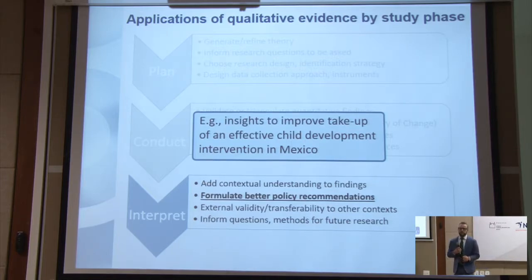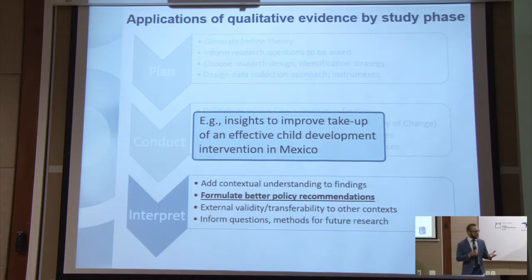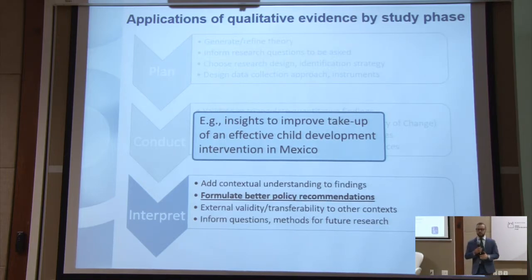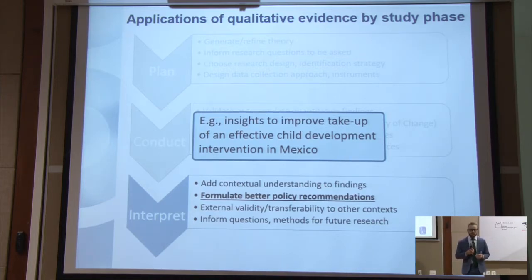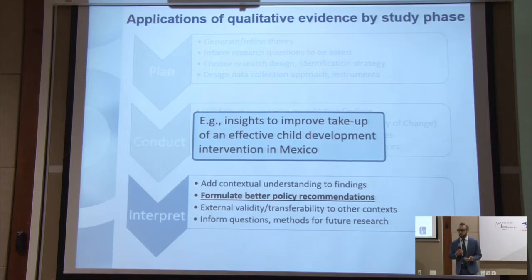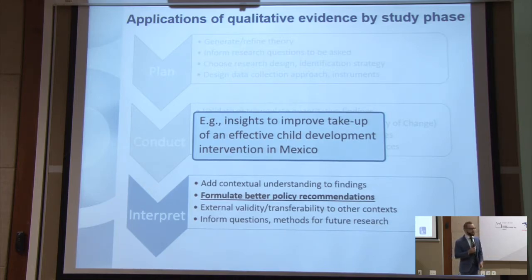Formulating better policy recommendations: one impact evaluation found that in a child development intervention in Mexico, the intervention was effective — the quantitative methods indicated there was a statistically significant improvement in the intervention group — and at the same time, there was low uptake. The qualitative evidence helped these researchers understand that many of the people participating in the program didn't actually know what the program was offering. They didn't fully understand what was available or what the goals were, and they were participating because their neighbors or relatives or friends had suggested it was a good idea. So there just wasn't much use of many of the services because they didn't know they were there.